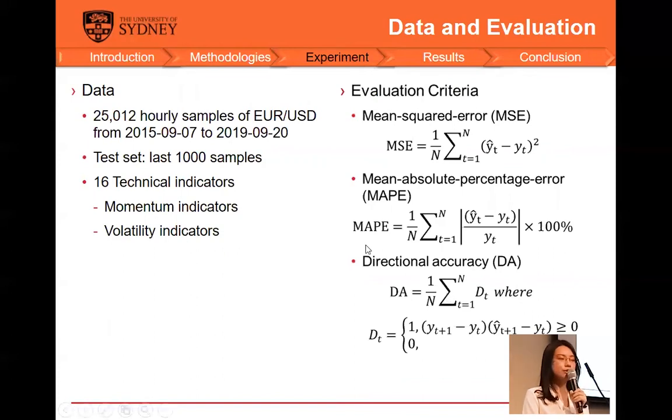In the experiment, I used about 25,000 hourly samples from the EURUSD currency pair that were collected in the recent four years, and the last 1,000 samples I used for the test set. As mentioned in the introduction section, the technical analysis is implemented. Therefore, 16 technical indicators of two types were generated as the additional inputs. Three evaluation criteria are used. The MSE and MAPE are two common metrics for regression problems. And the directional accuracy is calculated here because in real trading, traders can only make profit when they correctly predict the direction of the market trend.